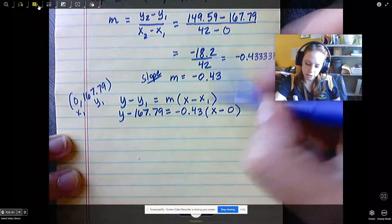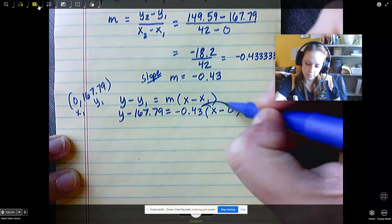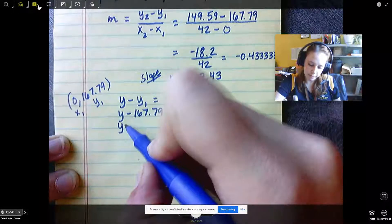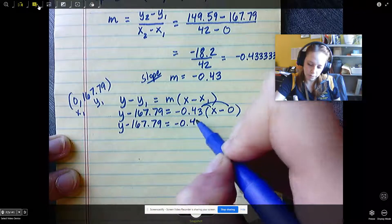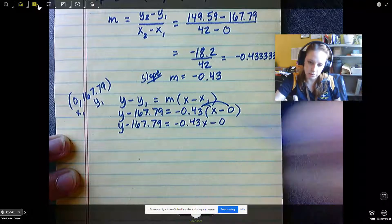Now we're going to distribute our slope. We're going to have y minus 167.79 equals negative 0.43x minus 0.